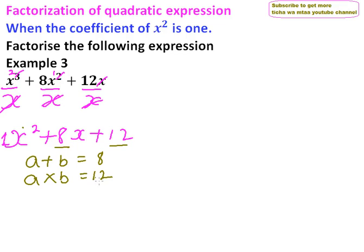These two numbers are 6 and 2. When you add 6 plus 2, you get 8. When you multiply 6 times 2, you get 12. So those two numbers satisfy our condition.